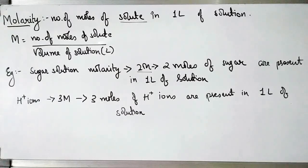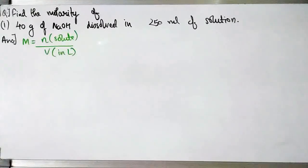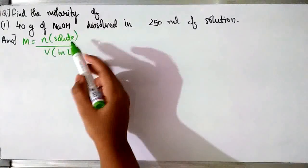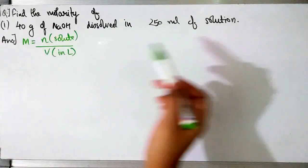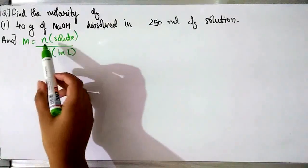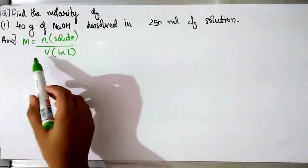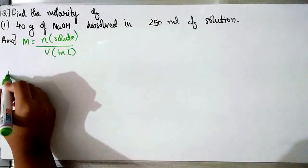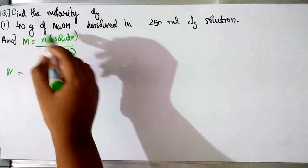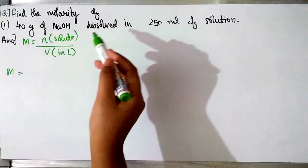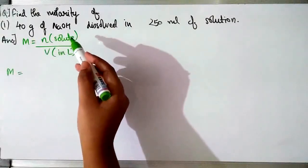Now let's solve some questions to have a better understanding of molarity. In this question we have to find the molarity of 40g of NaOH dissolved in 250ml of solution. The formula for molarity is number of moles of solute upon volume of solution in litres. NaOH is the solute but we don't know the number of moles of solute.